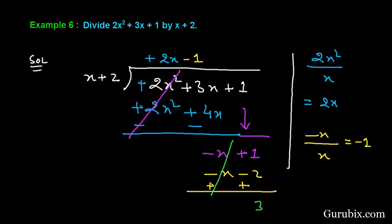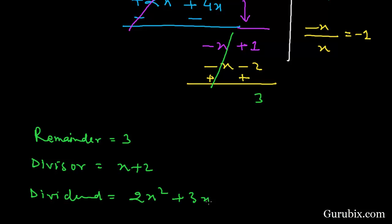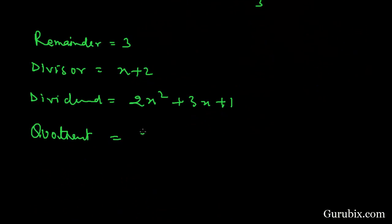So the remainder is 3. Divisor is x plus 2. Dividend is 2x square plus 3x plus 1. And finally, the quotient is 2x minus 1. So this is the solution of the example. Thank you.